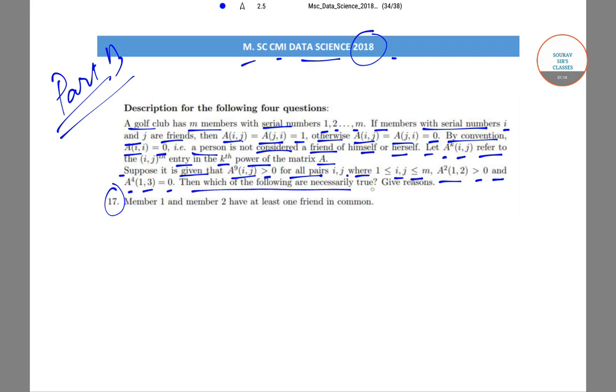Then which of the following are necessarily true? Give reasons as well. So question number 17 is: member 1 and member 2 have at least one friend in common.